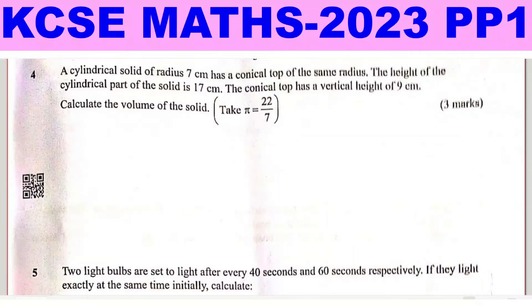Question 4. A cylindrical solid of radius 7 centimeters has a conical top of the same radius. The height of the cylindrical part of the solid is 17 centimeters. The conical top has a vertical height of 9 centimeters. Calculate the volume of the solid. Take pi to be 22 over 7.